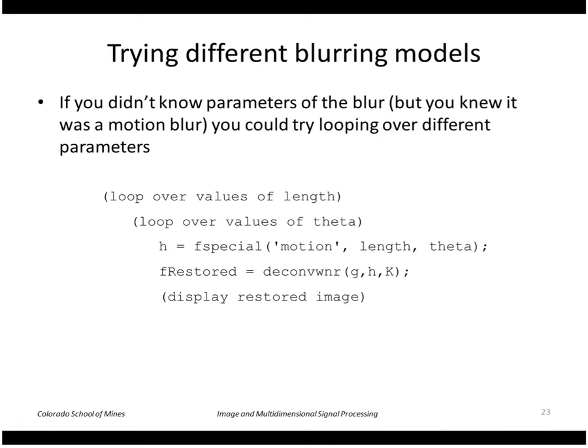Now if you didn't know the blurring function, but you knew it was a motion blur, you could try applying a deconvolution with different trial degradation functions. Namely you could try various values of length and theta, construct the degradation function and try to deconvolve the image with that, and visually inspect the results to see which one gives you the best results.